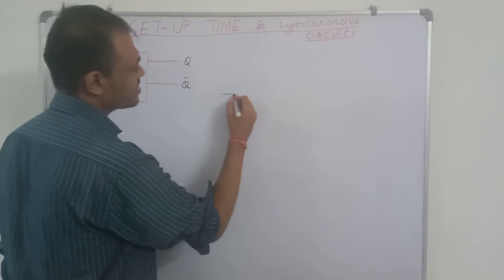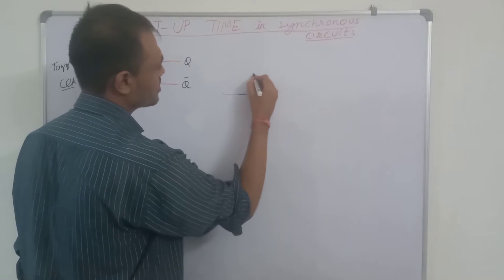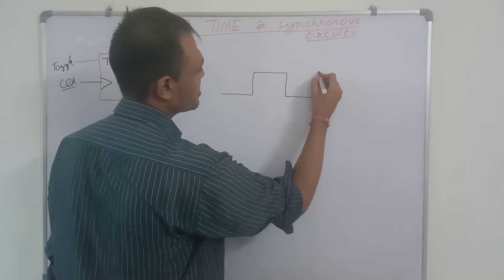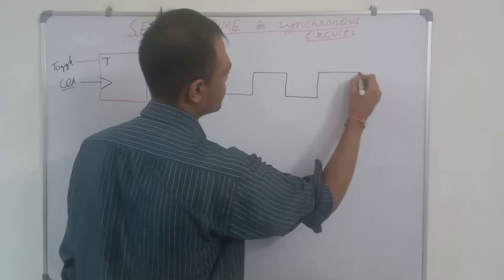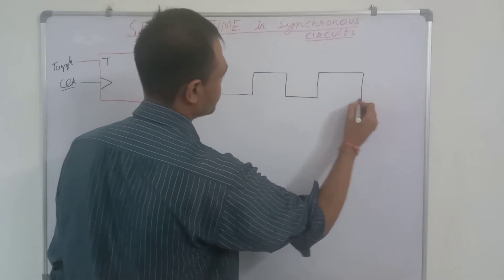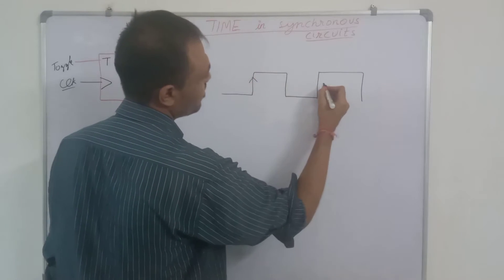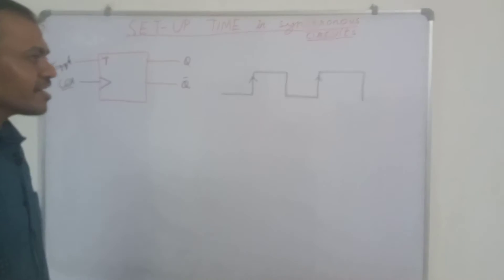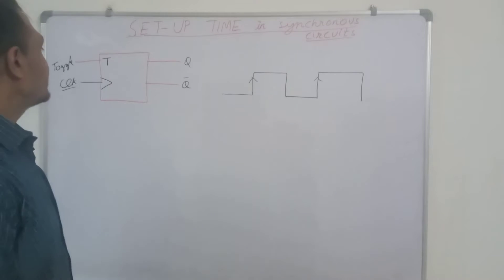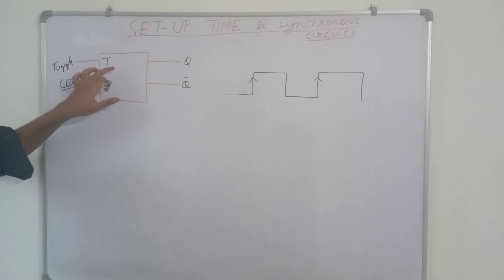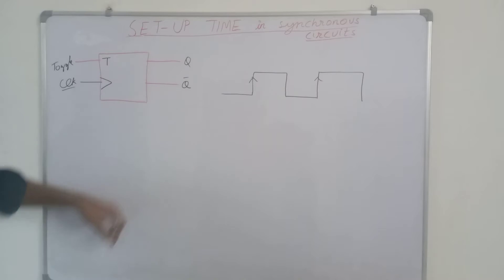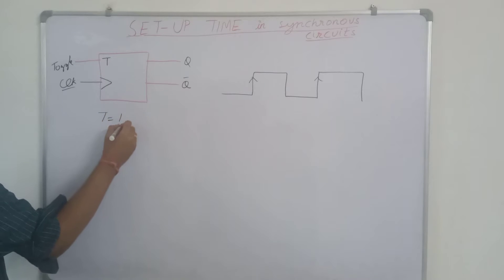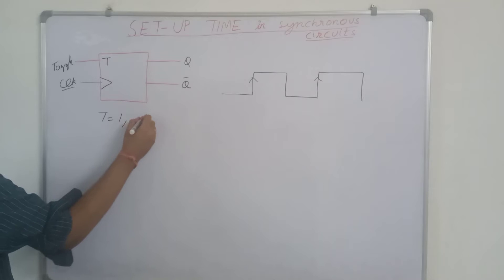If we have the clock edge like this, this flip-flop works on the positive edge of the clock. The output of this T toggles when T equal to 1 — when T equal to 1, then the output will toggle.